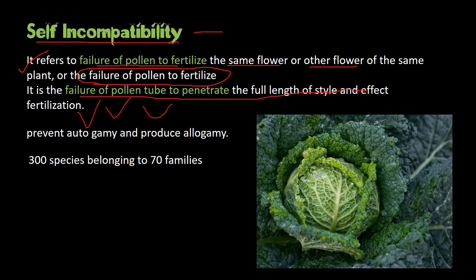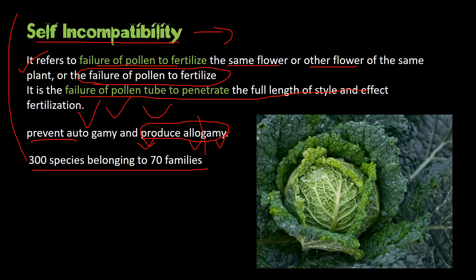The main impact of self-incompatibility is that it promotes allogamy — that is, cross-fertilization — where different types of characters are reproduced. It prevents autogamy and promotes allogamy. This is one of the main advantages of self-incompatibility. More than 300 species belonging to 70 families exhibit this phenomenon called self-incompatibility.